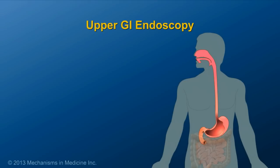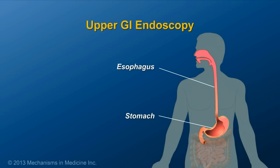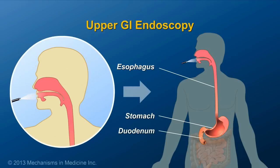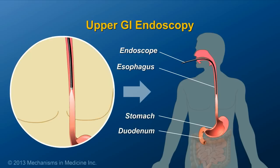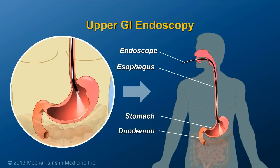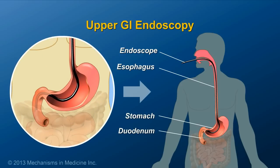Upper GI endoscopy is used to examine the esophagus, stomach, and duodenum. The physician guides an endoscope down the throat — a lighted, flexible tube with a camera attached.